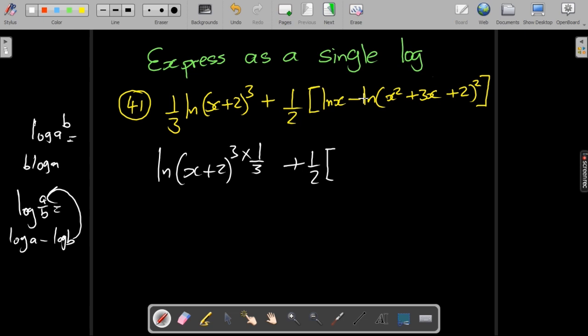So let's transform this inner part into the ln of x, the first one divided by this other argument, which is x squared plus 3x plus 2 squared.